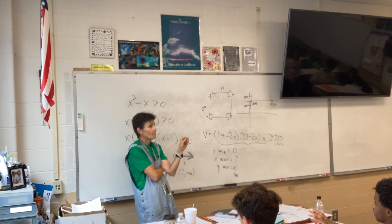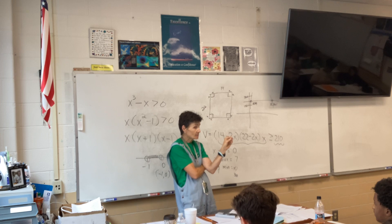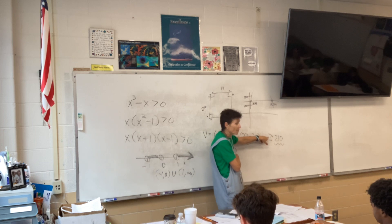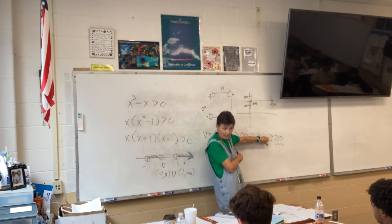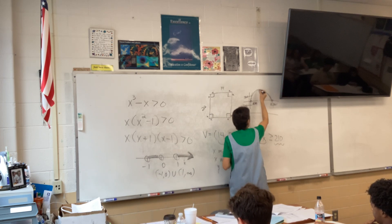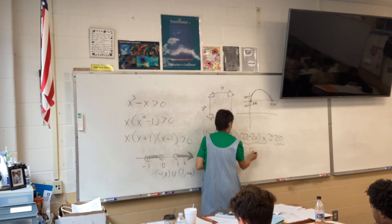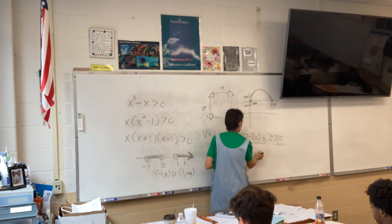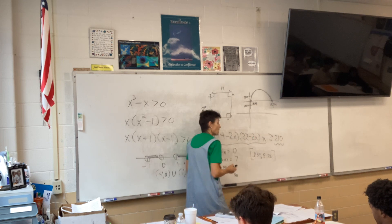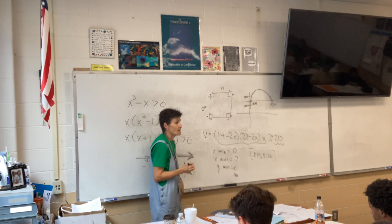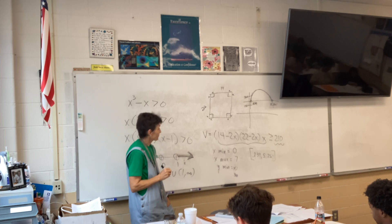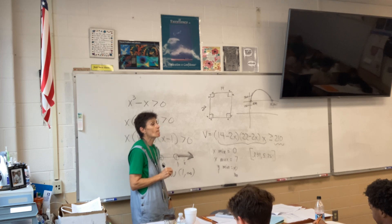But, I am interested not only in equaling 210, but also being greater than 210. So, where is it greater than 210? All of this, right? Between. So, your answer will be 0.839 to 5.261. Those are the x values that will produce a volume equal to or greater than 210.